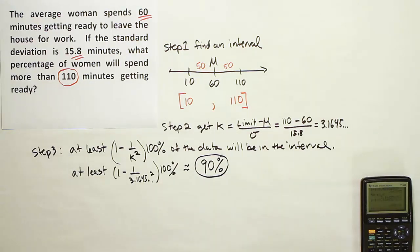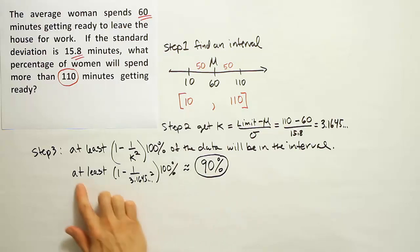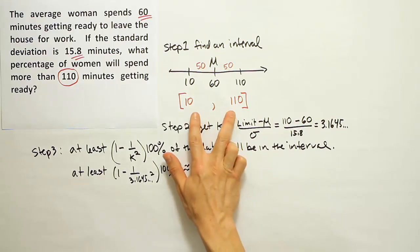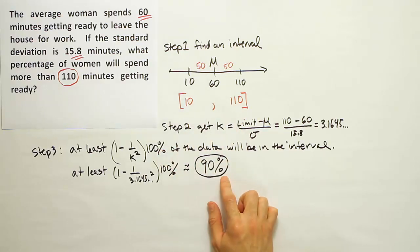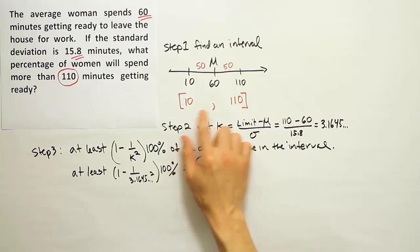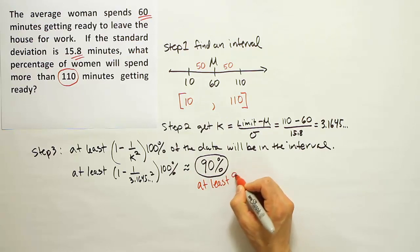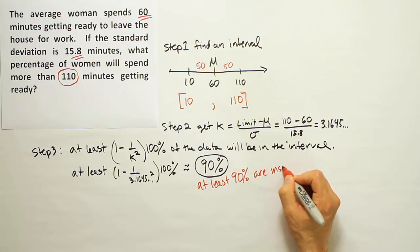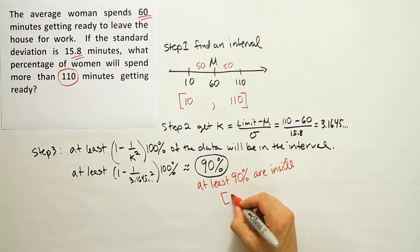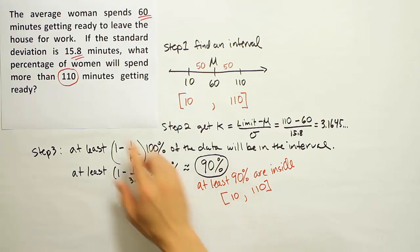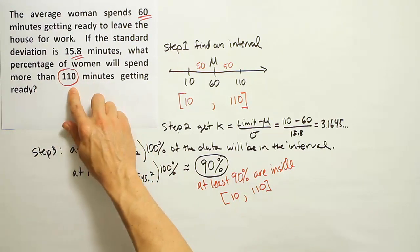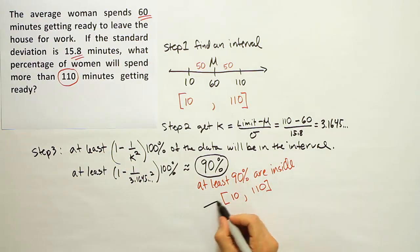Now we have to stop and analyze what we've just done. We found out that at least 90% of the women will spend between 10 minutes and 110 minutes getting ready to leave for work. But we weren't asked about this interval. We know now that at least 90% are inside the interval from 10 to 110. But we wanted to know what percent of women will spend more than 110 minutes.